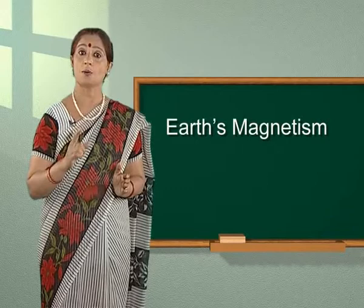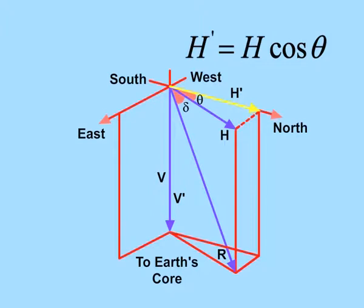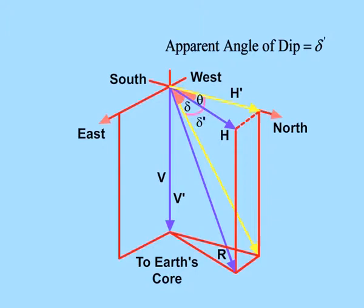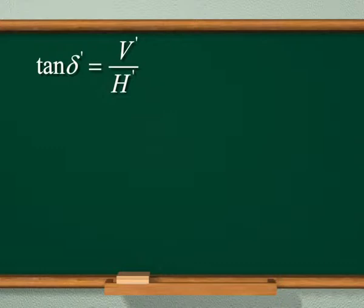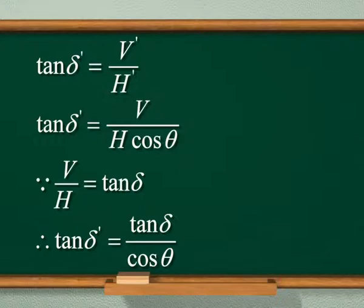This might be the cause for reversal of the direction of Earth's magnetic field. If a vertical plane makes an angle theta with the magnetic meridian, then H dash would be H cos theta and V dash would be V. If delta is the true angle of dip and delta dash is the apparent angle of dip in the vertical plane making angle theta with the magnetic meridian, then tan delta dash equals V dash upon H dash, that is V divided by H cos theta. Since V by H equals tan delta, therefore tan delta dash equals tan delta divided by cos theta.